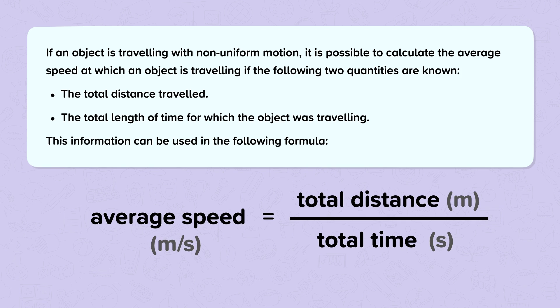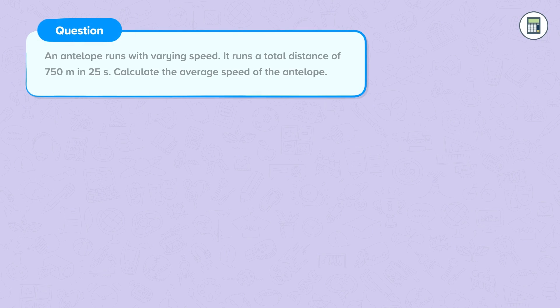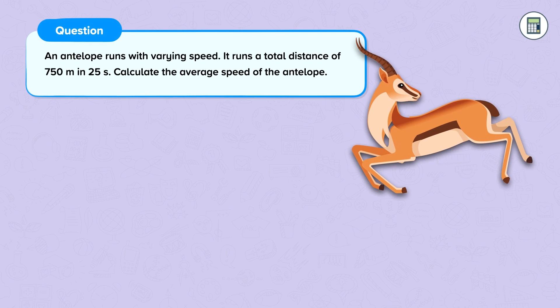Let's have a look at how we can calculate average speed. An antelope runs with varying speed. It runs a total distance of 750 metres in 25 seconds. Calculate the average speed of the antelope.